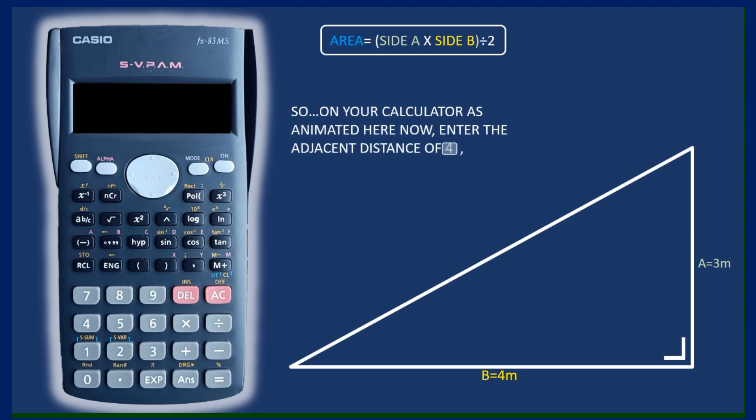And as you'll see here on the calculator when you get that answer you're going to divide your answer in half. So 12 divided by 2 and of course that will give you an answer of 6.